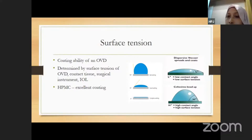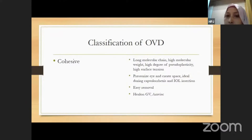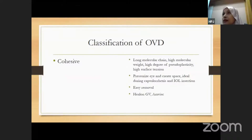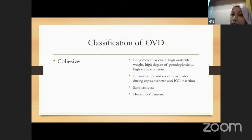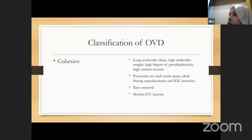For the classification of OVDs: cohesive OVDs have long molecular chains, high molecular weight, a high degree of pseudoplasticity, and high surface tension — that's why they form a blob or gel on the surface. They have the ability to pressurize the eye and create space, making them ideal during capsulorhexis and opening up the back of the eye before IOL insertion. Removal is very easy during phaco emulsification.